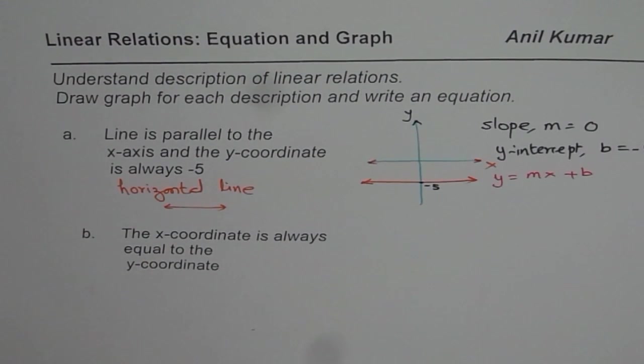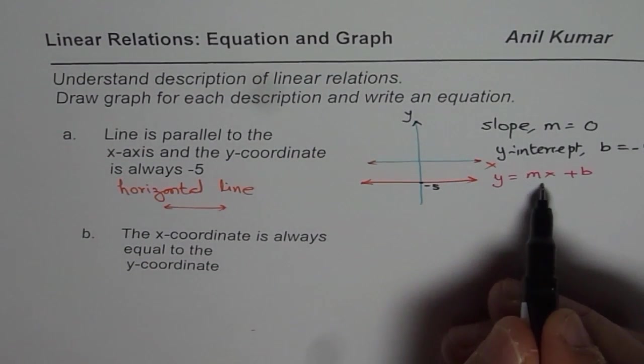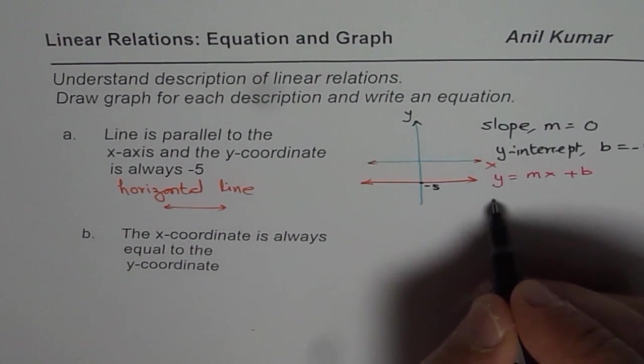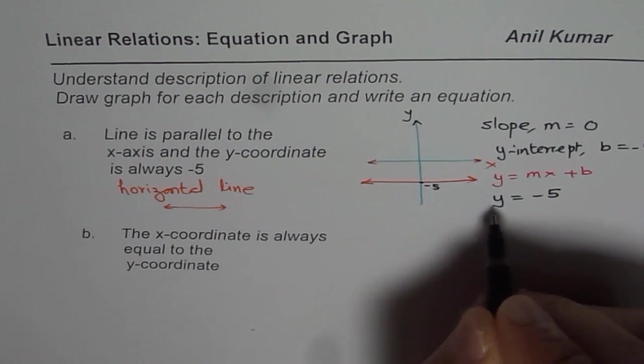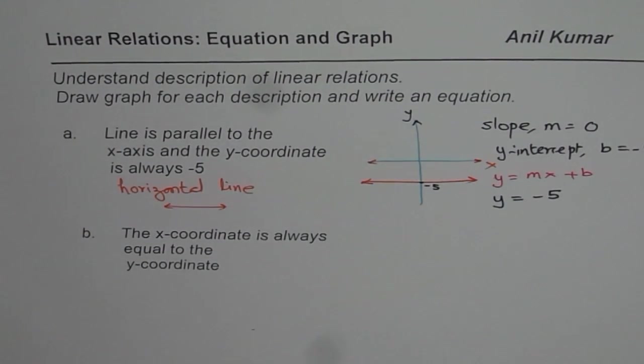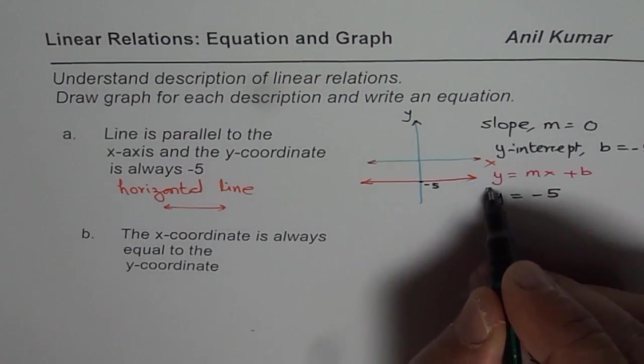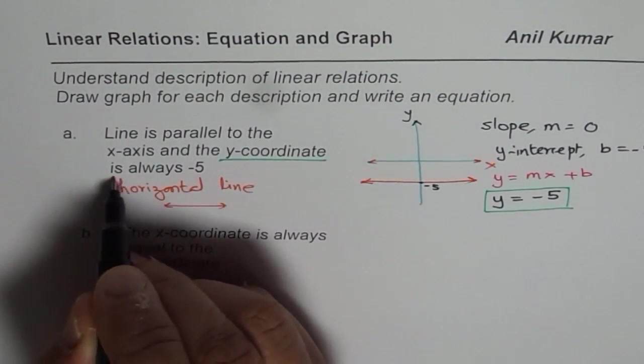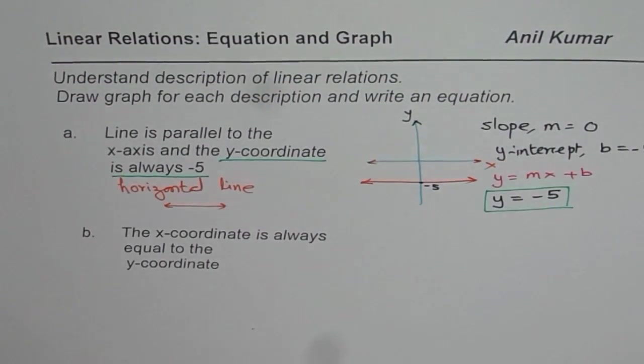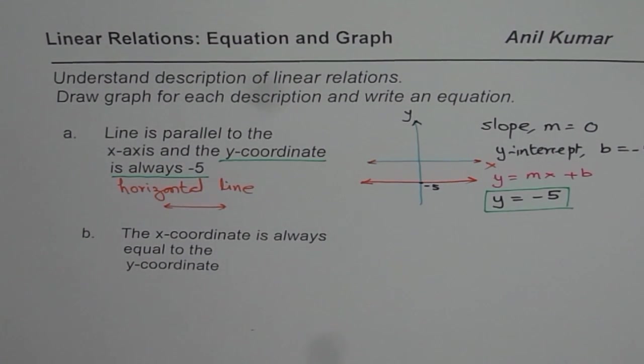If we consider the equation of the line of the form y = mx + b, in that case, m is 0, so the first term is 0. So we get equation as y = -5. So that becomes the equation for our line. And it fits well with the description that y-coordinate is always minus 5. That is how the description, graph, and equation is connected.